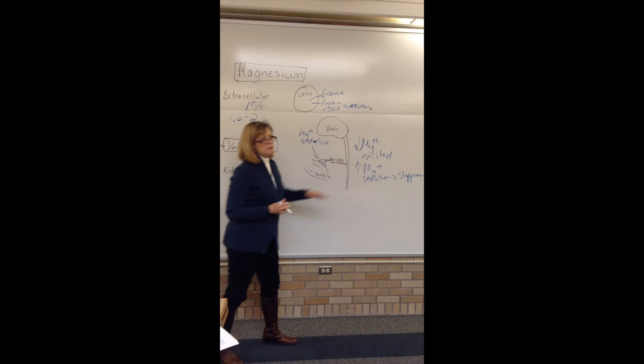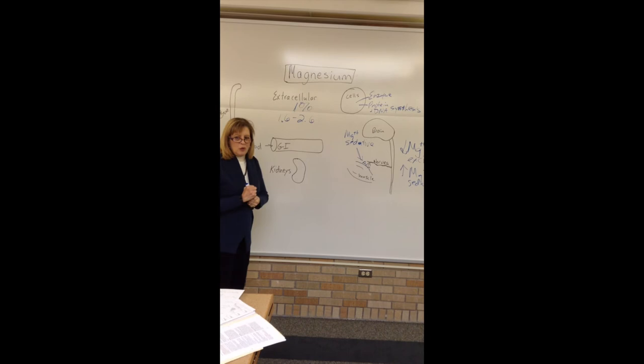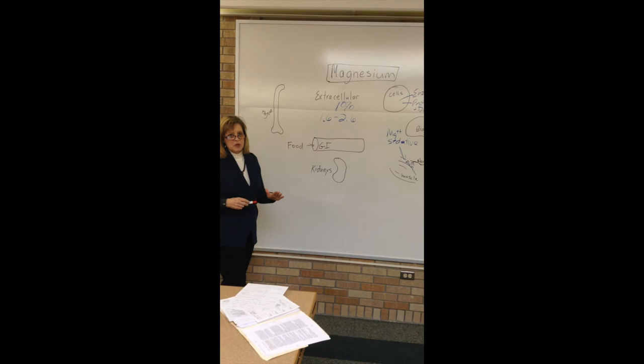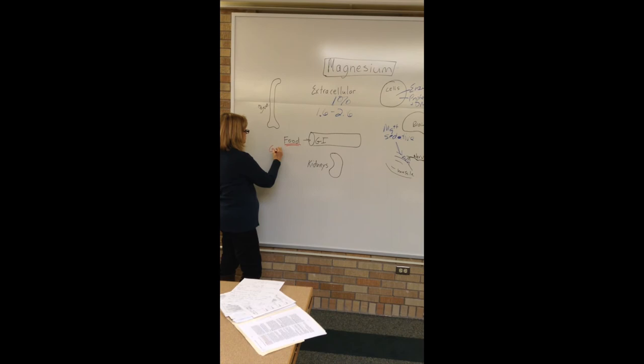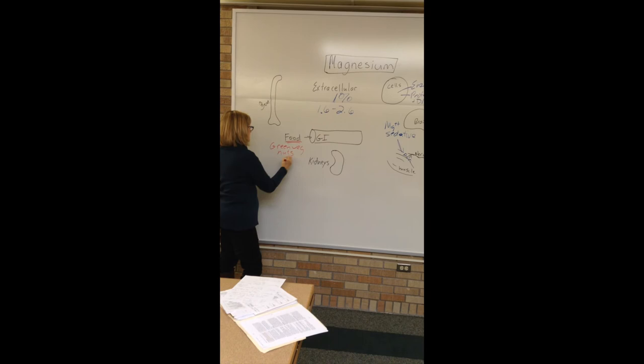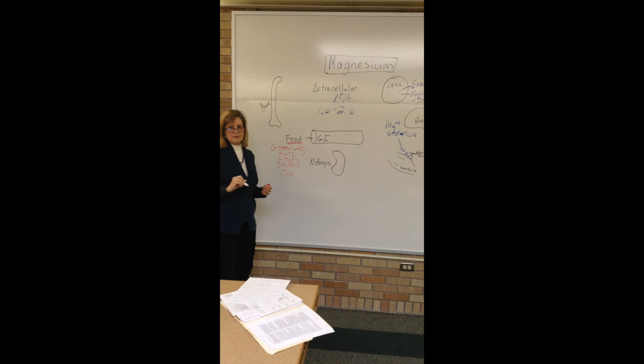That 1% extracellular magnesium in our serum is what we monitor and are concerned about. We get magnesium from foods including nuts, green vegetables, meats, seafood, grains, and even chocolate.